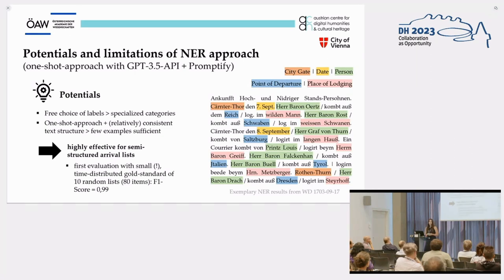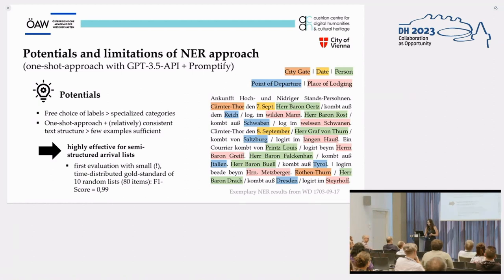To give a first impression of how efficient it worked: a first systematic evaluation with a small time-distributed gold standard of 10 randomly selected arrival lists — around 80 list entries — resulted in an F1 score of 0.99. Of course further tests are surely needed, as this is only a small sample, but these first results are quite impressive and enable extensive quantitative analysis on the arrival lists' contents.